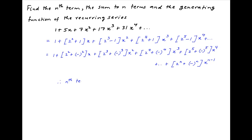Therefore, the nth term of this series is equal to (2 raised to the power n plus (−1) raised to the power n) multiplied by x raised to the power n minus 1. And this is the required answer.